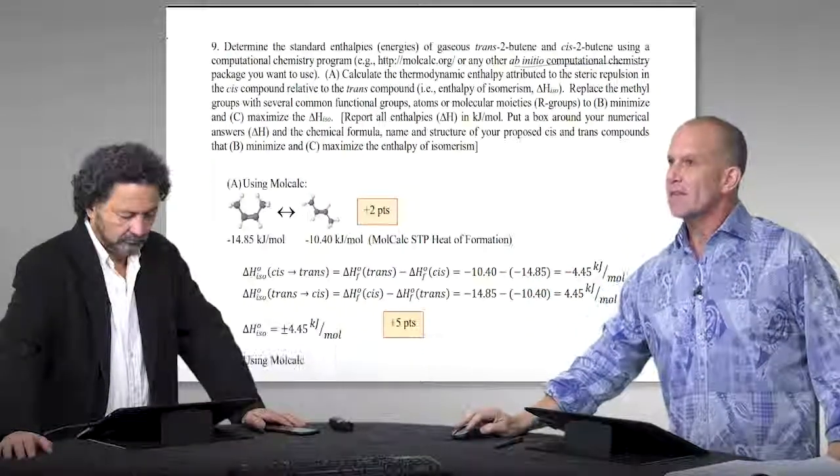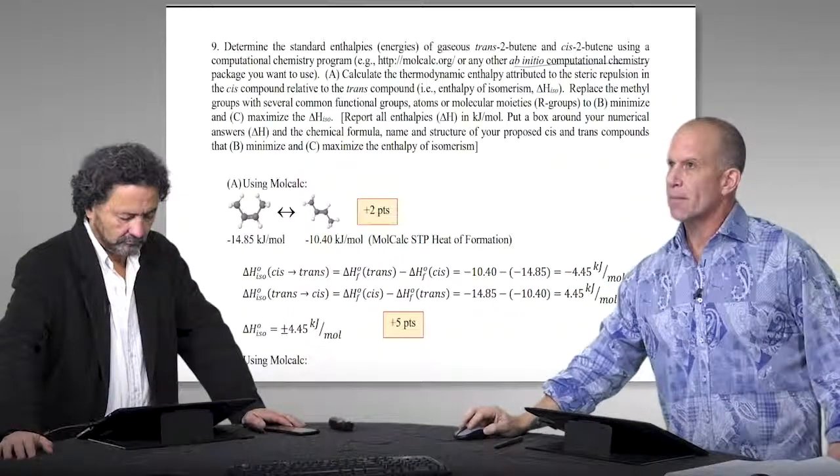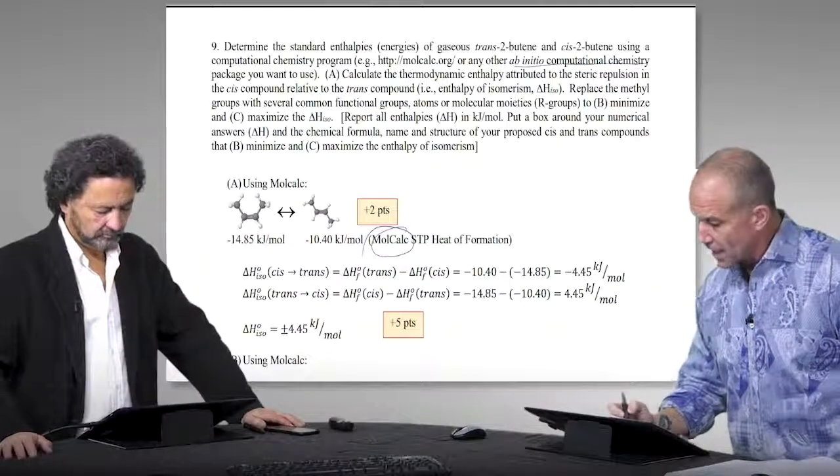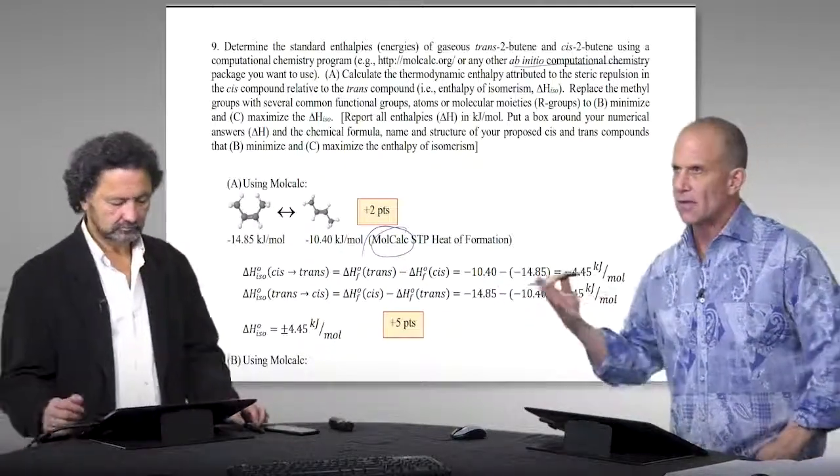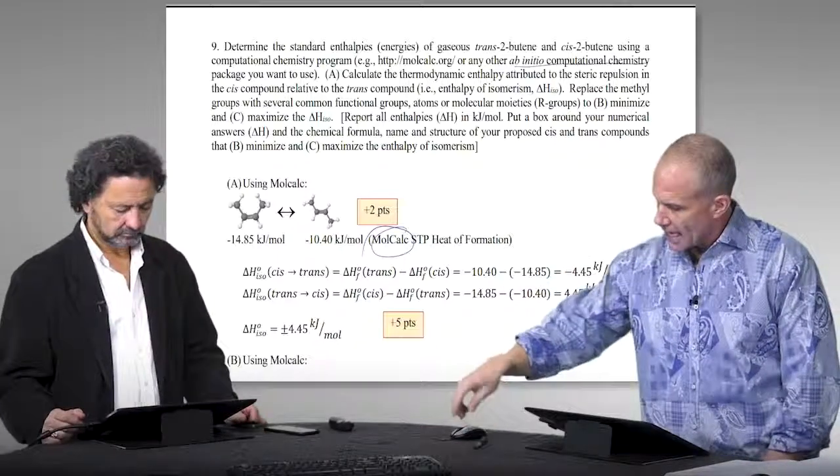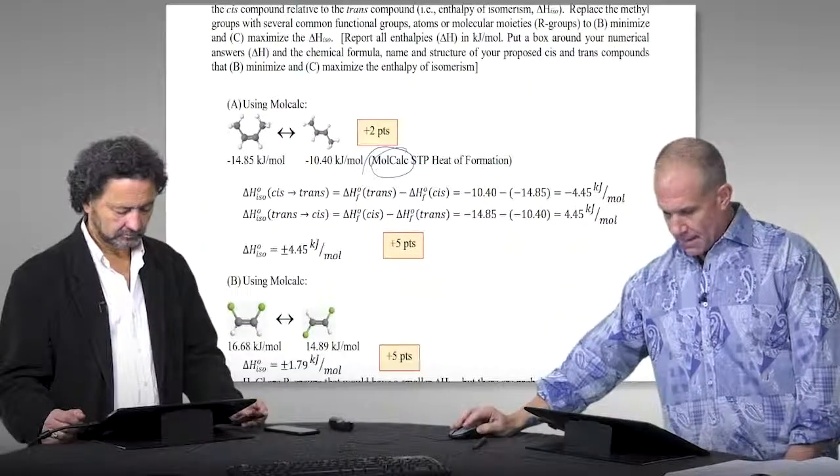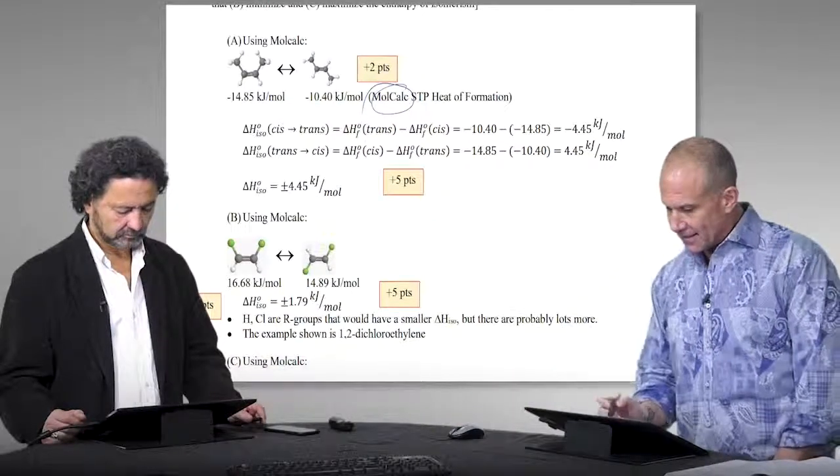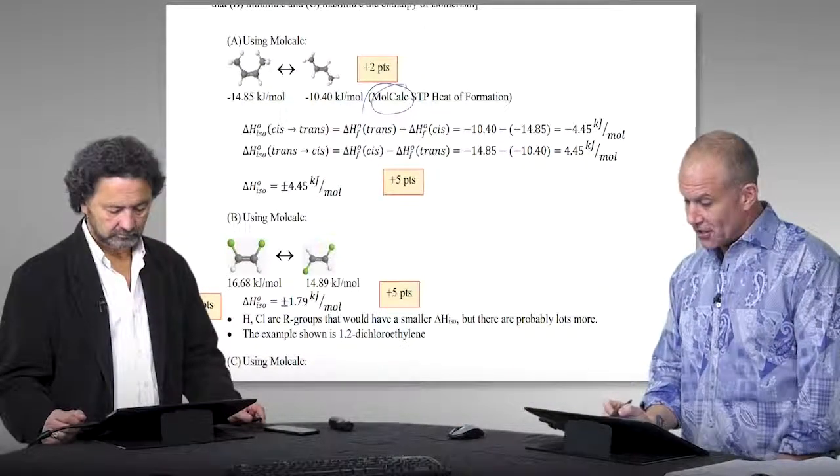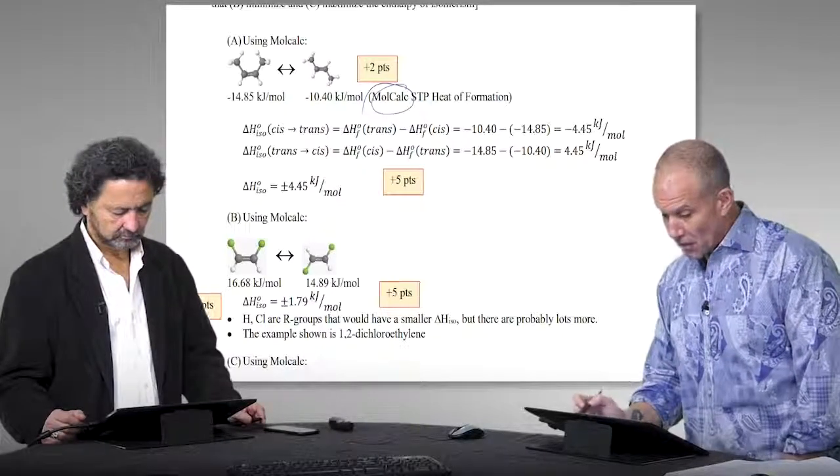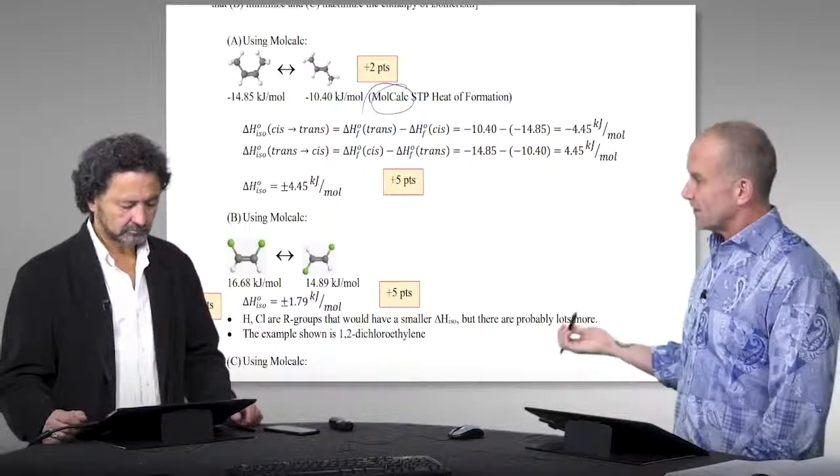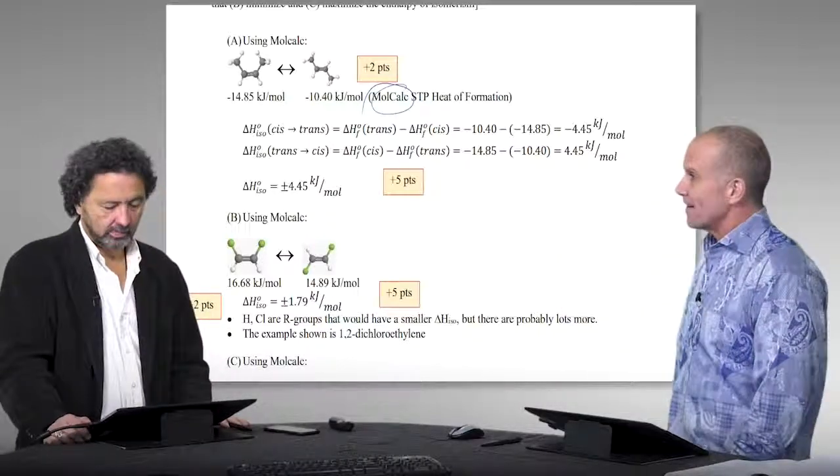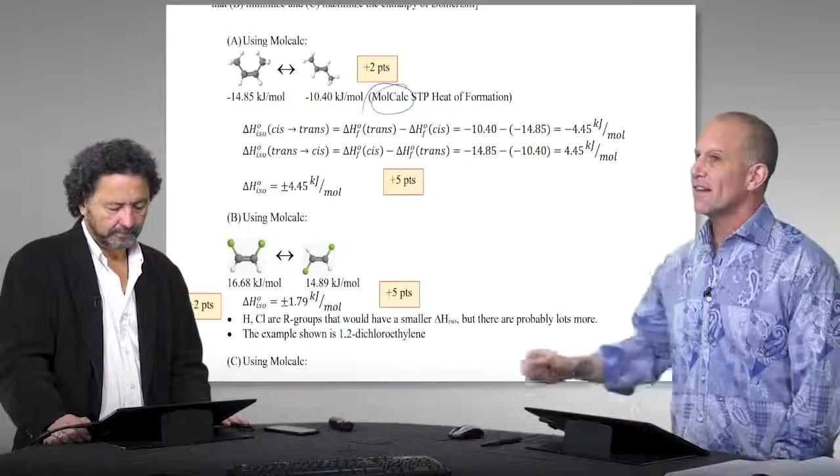A lot of times we often use things that we might not know everything behind the scenes, but it doesn't mean that we can't use it effectively to help us with some thermodynamics. So this gives, even with these simple programs, like one that's available online for free to use, mole calc, which uses a pretty low level of theory, I think it's AM1, they're able to look at this isomerization trans-cis and look at what those energy differences would be. And it's actually pretty close to what experimentally, even at a fairly low level.